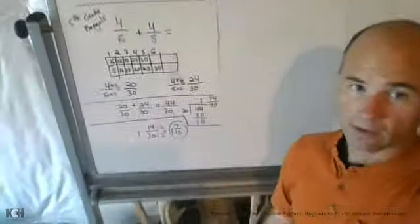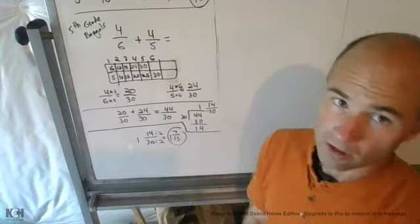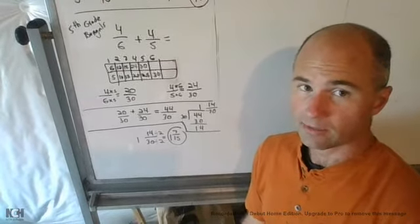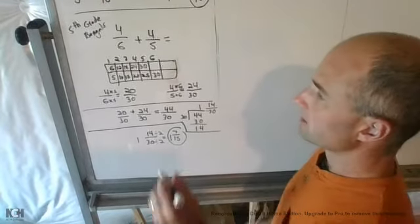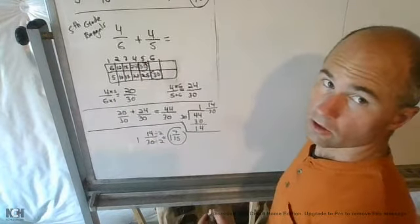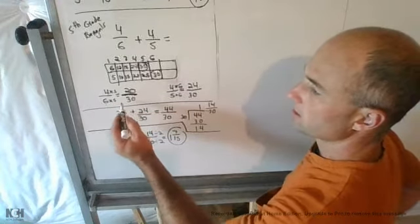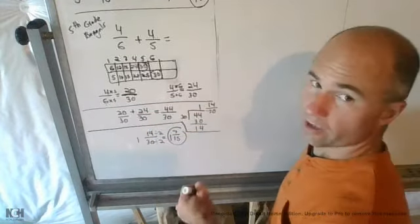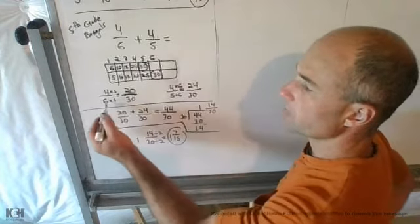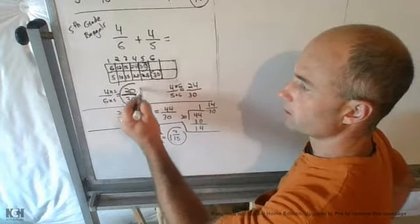Now, we have 5th grade Bengals and Reds, pay attention. 4/6 plus 4/5. To add them together, we have to find a common denominator. Common denominator here is 30. So then I've got to take 4/6 to find the equivalent fraction where 30 is the denominator. I do that when 6 times 5 gets you 30, so 4 times 5 gives you 20 over 30.